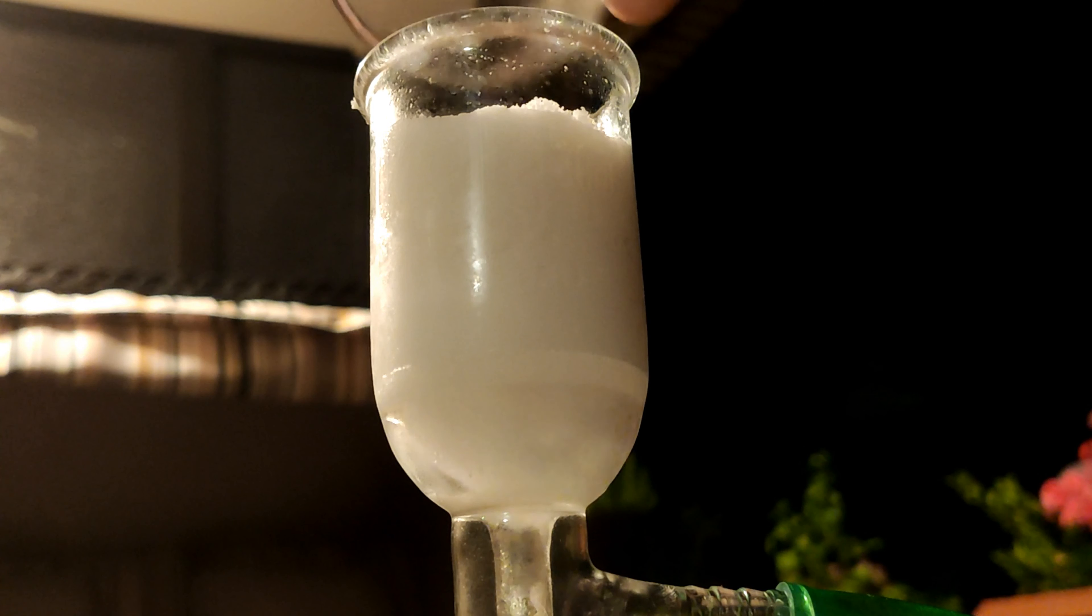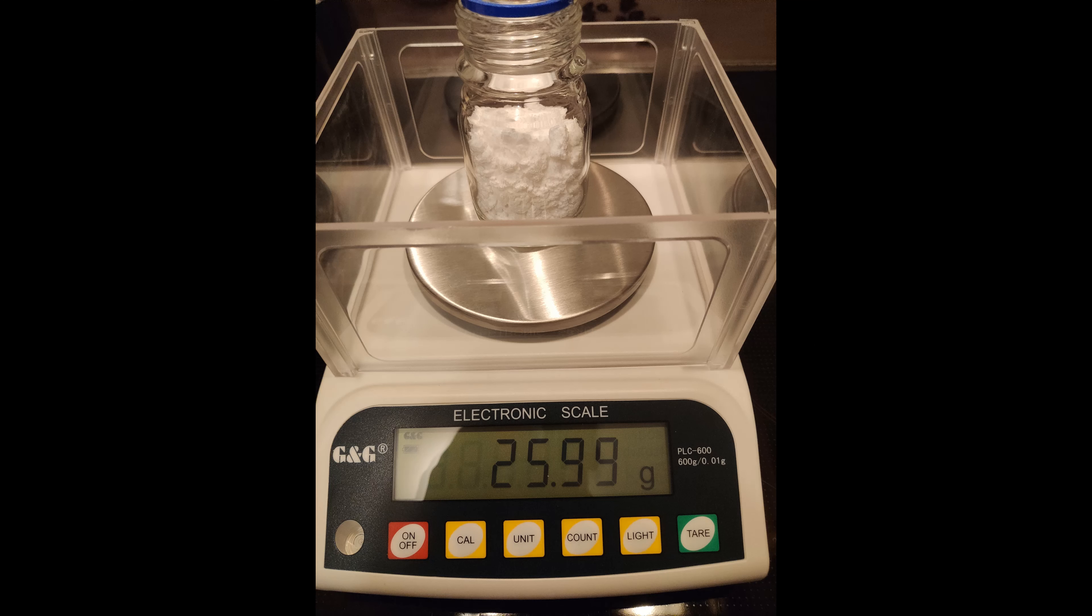After that it was put in the vacuum desiccator over sulfuric acid to dry. After about one and a half days it was completely dry and was weighed. You end up with 25.99 grams of completely dry adipic acid which corresponds to a yield of about 44%.